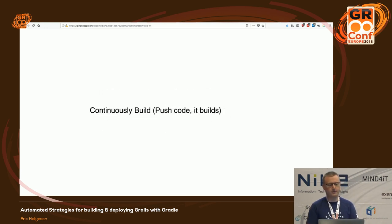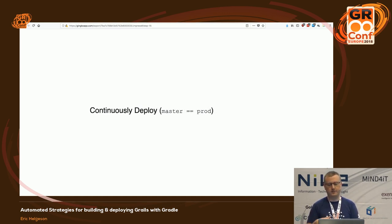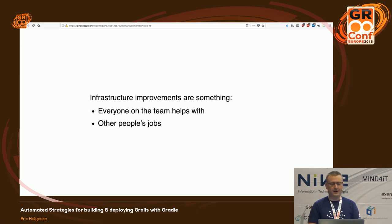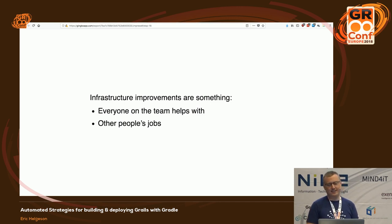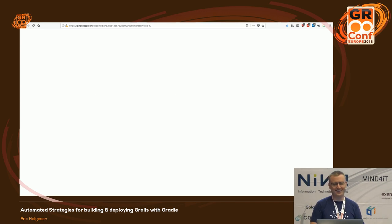Show of hands — who does continuous builds? When you push your code it builds right away. Almost everyone — that's a good percentage. How about continuous deployment? When you merge to master your main branch, it starts a deployment process. That's a lot harder to do, so just one person. And is infrastructure your job or someone else's job? How many people — everyone cares about infrastructure on your team? One or two, and then someone else's job is the rest.